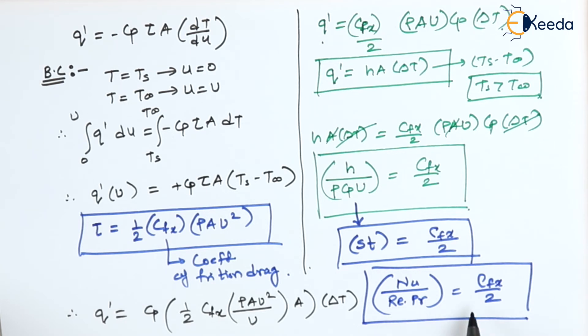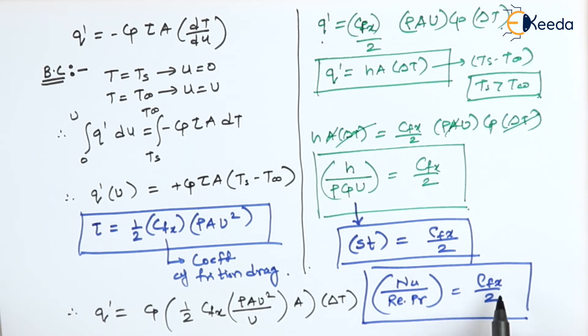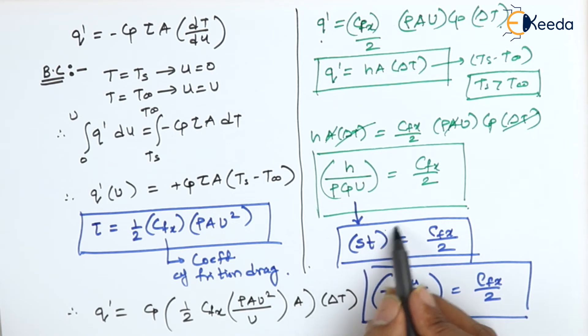So finally what can we conclude? At the end of this analysis we can conclude that if I know the coefficient of friction drag, that is the Cfx value, I can find the Stanton number. If I know the Stanton number I can find the Nusselt number. Then we know that the Nusselt number is given as H L upon K. So with the help of Nusselt number we can find the value of heat transfer coefficient that is H. If I know the value of H we can find the value of Q dash.